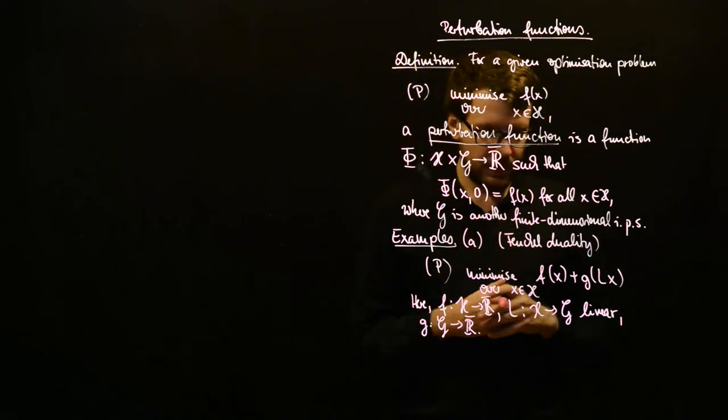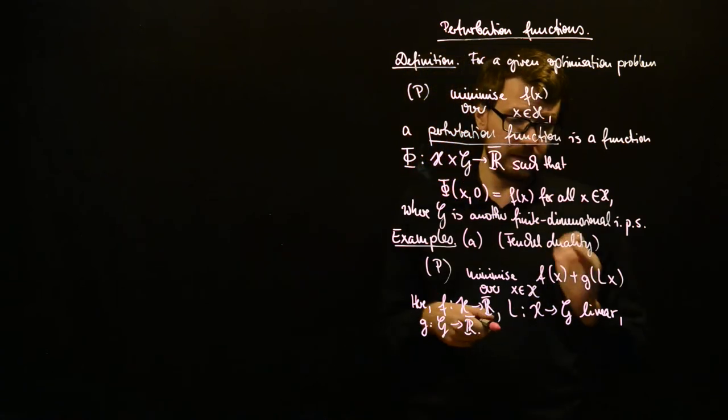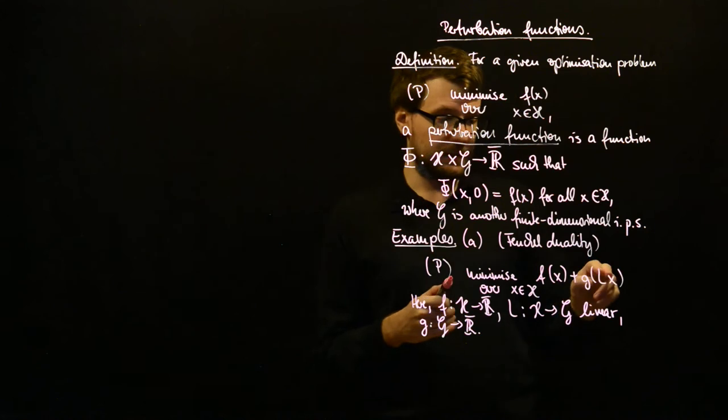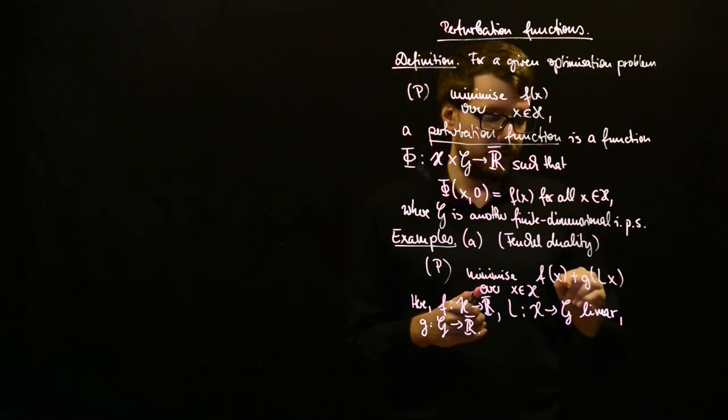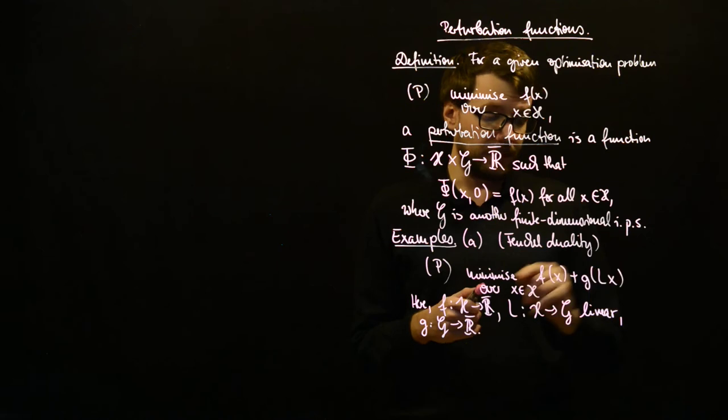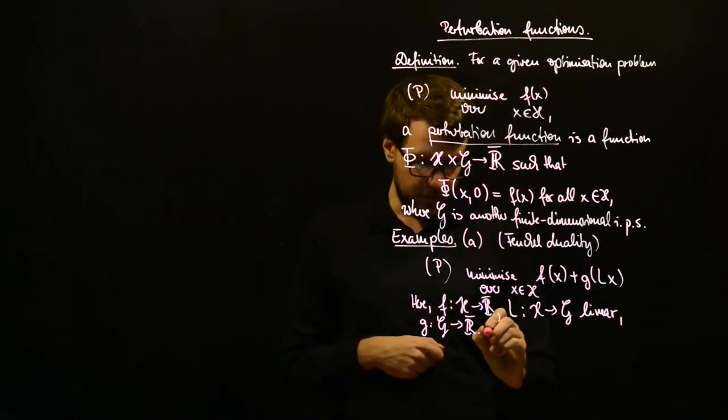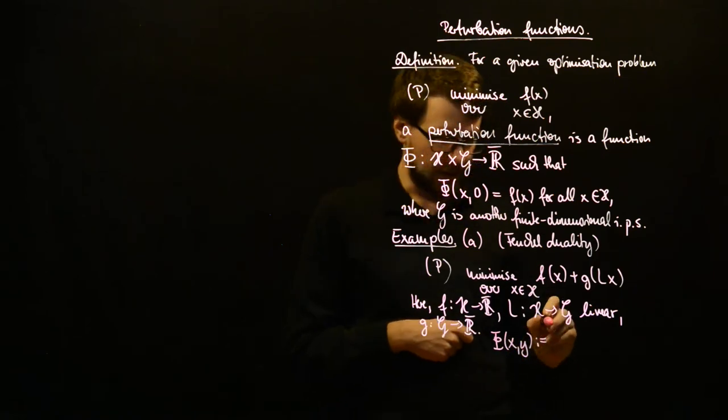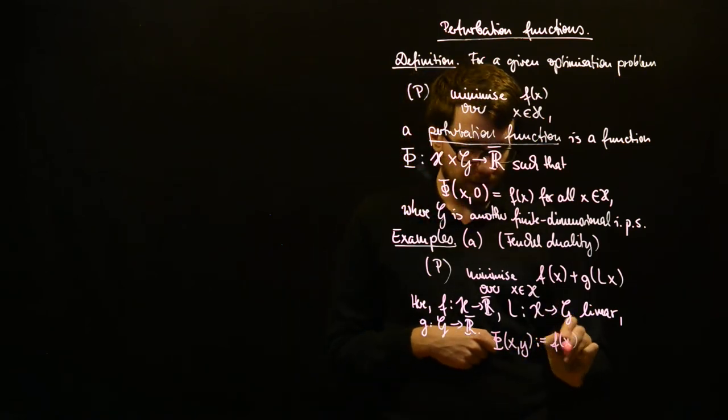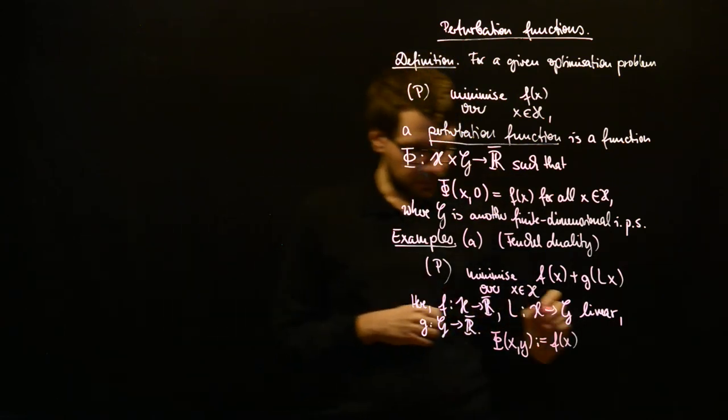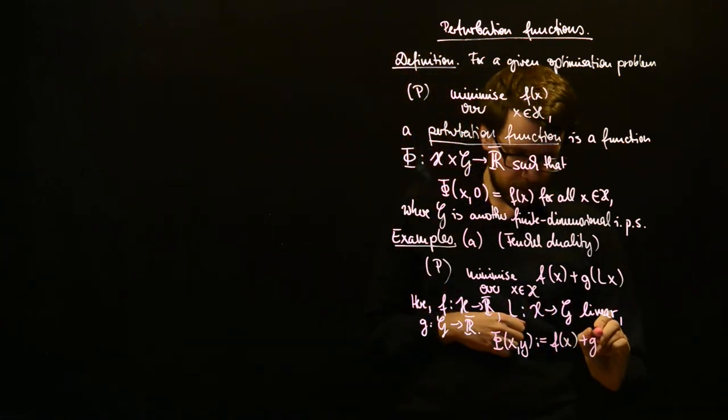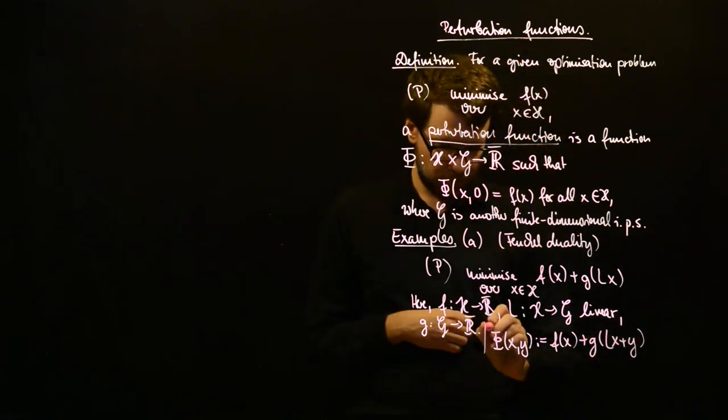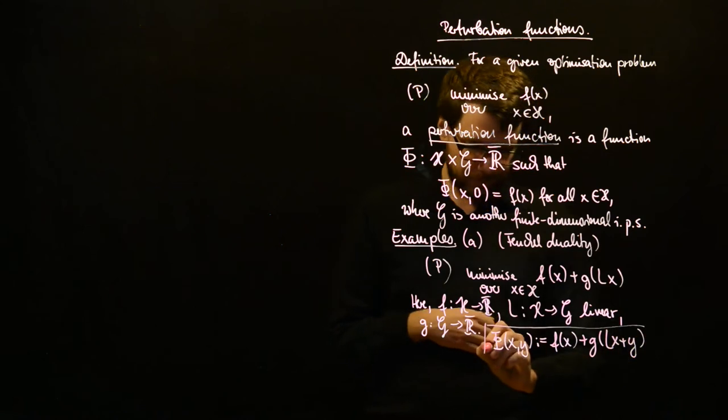So, once we have this structure here, we can use this to introduce the perturbation variable. And this somehow decouples this f part from the g composed with L part. So, here we can choose phi of (x,y) as f of x plus g of (Lx plus y).